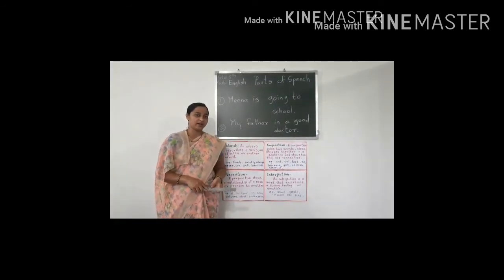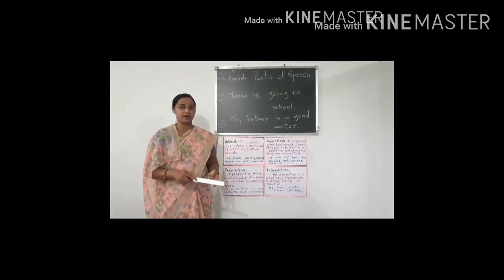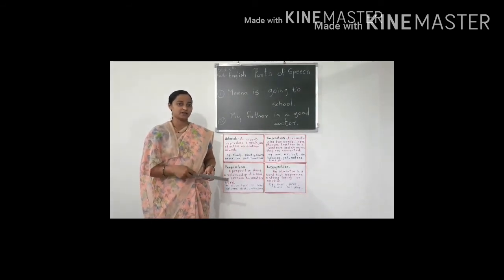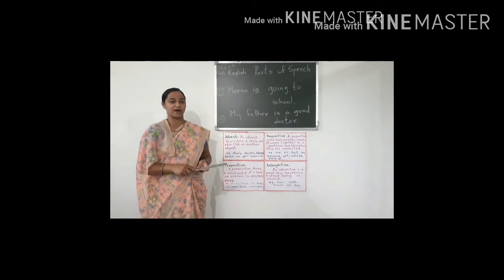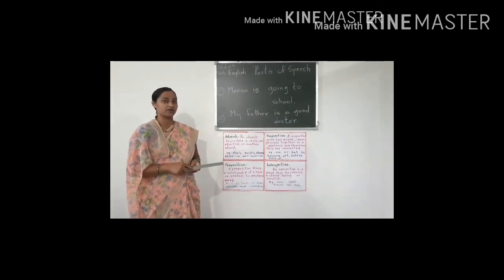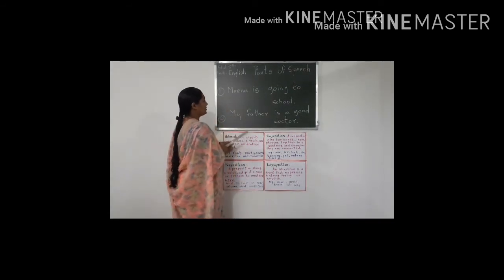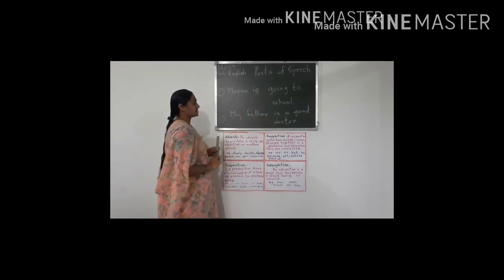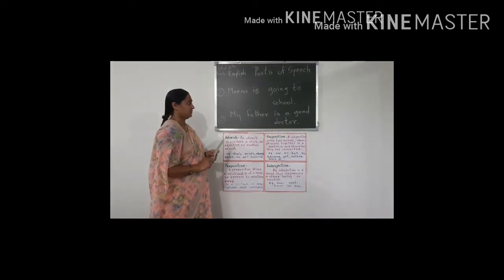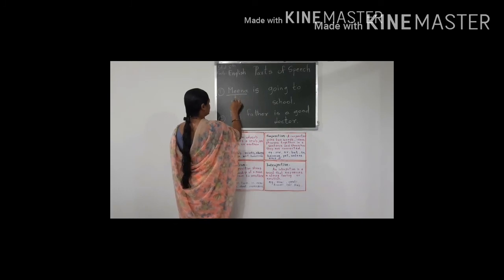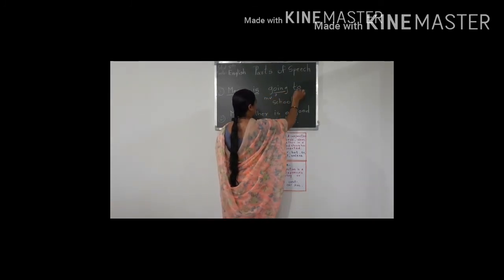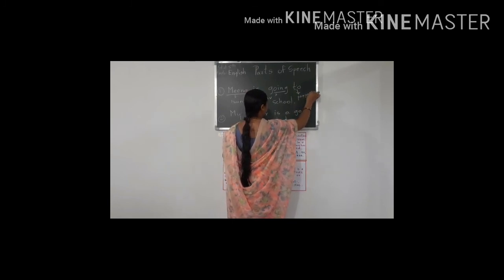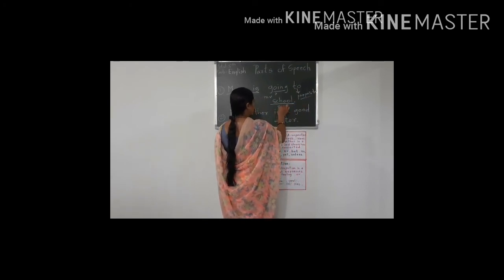In this way, we have learned all eight parts of speech: noun, pronoun, verb, adverb, adjective, preposition, conjunction, and interjection. All these eight parts of speech are very important. Every sentence is made with parts of speech, and each word belongs to a particular part of speech. For example: Mina is going to school. In this sentence, 'Mina' is a noun, 'is' is a helping verb, 'going' is the main verb, 'to' is a preposition, and 'school' is a noun.